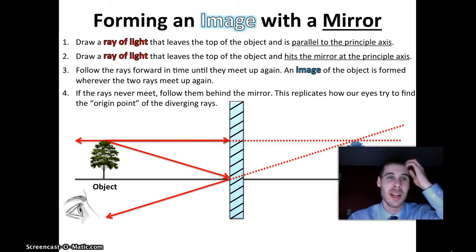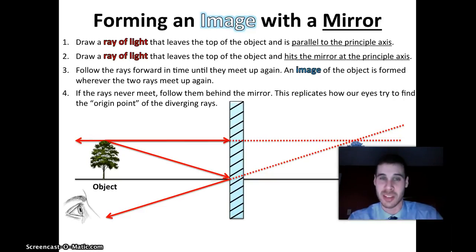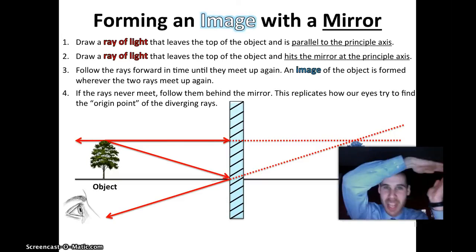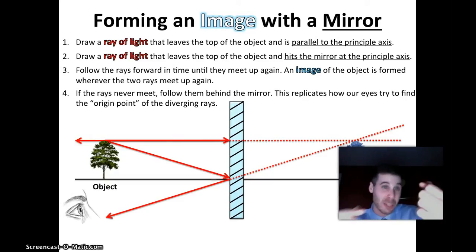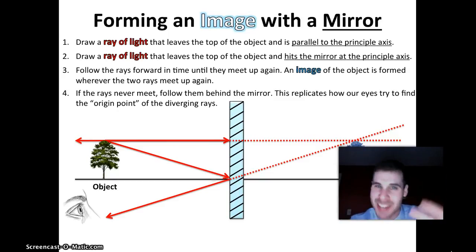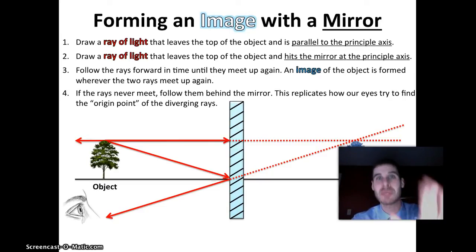Now we've figured out how to form an image with a mirror. The trick was drawing those two special rays, following them forward in time, and finding where they met up. In this case they didn't meet up in real space, so we asked how the brain would interpret this — and the brain traces them back to a location behind the mirror. This is with a plane mirror. There are a couple of complexities to objects and images that we need to address.